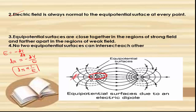This confirms that equipotential surfaces are close together in the region of strong field and far apart in the region of weak field — this is the third property. The fourth property is very simple: no two equipotential surfaces can intersect each other. If they intersected, there would be two values of electric potential at the point of intersection, which is not possible. This is the fourth property.